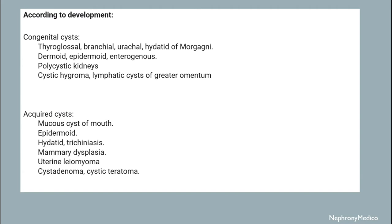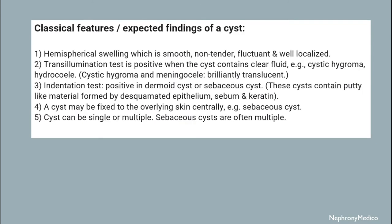According to development, cysts may be congenital or acquired. Congenital cysts include thyroglossal, branchial, urachal, dermoid, epidermoid, and polycystic kidneys, among others. Acquired cysts include mucous cyst of the mouth, epidermoid, hydatid, mammary dysplasia, uterine leiomyoma, and other cysts.